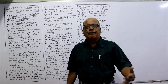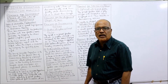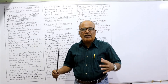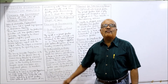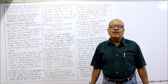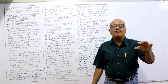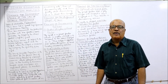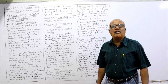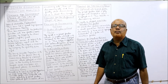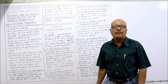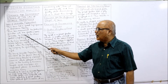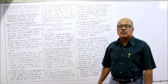First of all, we'll recap the law of variable proportions, then discuss the reasons. This law has great significance in economic theory, just like the law of diminishing marginal utility, law of demand, and law of supply. This law examines the production function, which expresses the technical relationship between input and output — how the output will change for a given change in input.